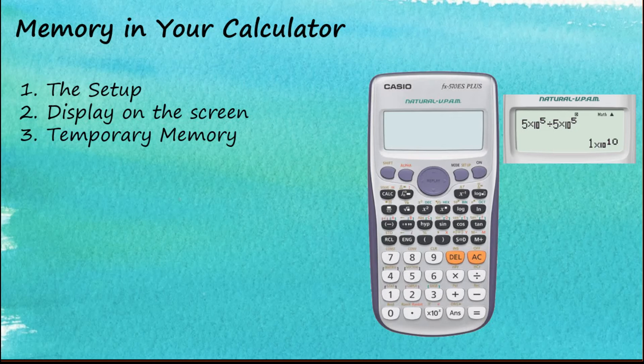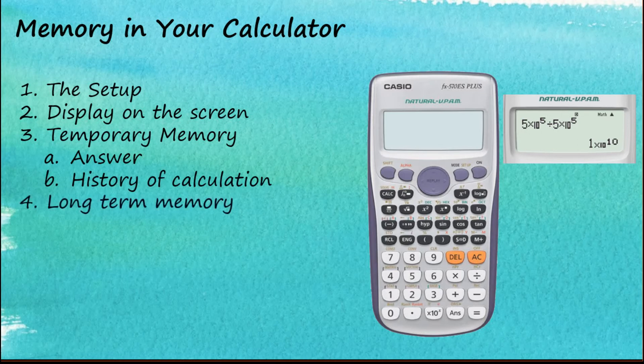The third type of memory is the temporary memory. There are two types of temporary memory: the Answer and the history of calculations. We are going to discuss this in the very next slides. Another type of memory in your calculator is the long-term memory, for example the stored memories or stored variables.